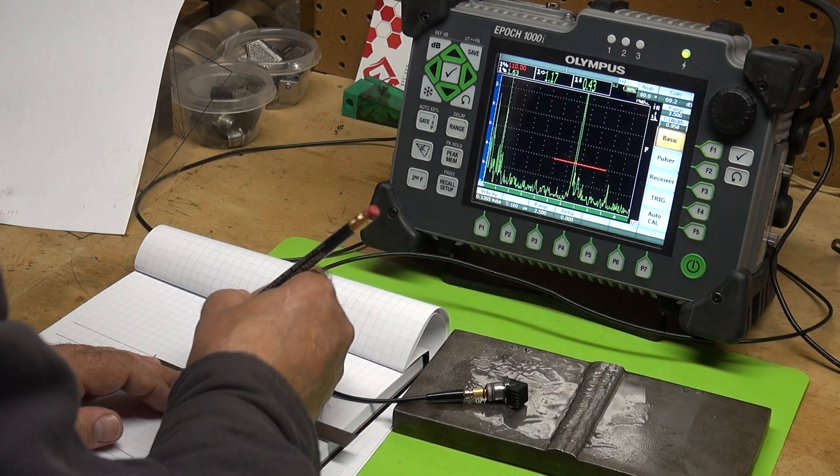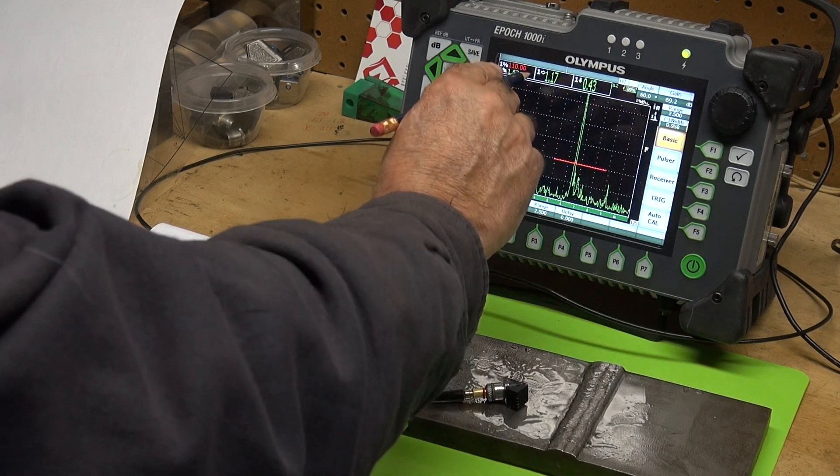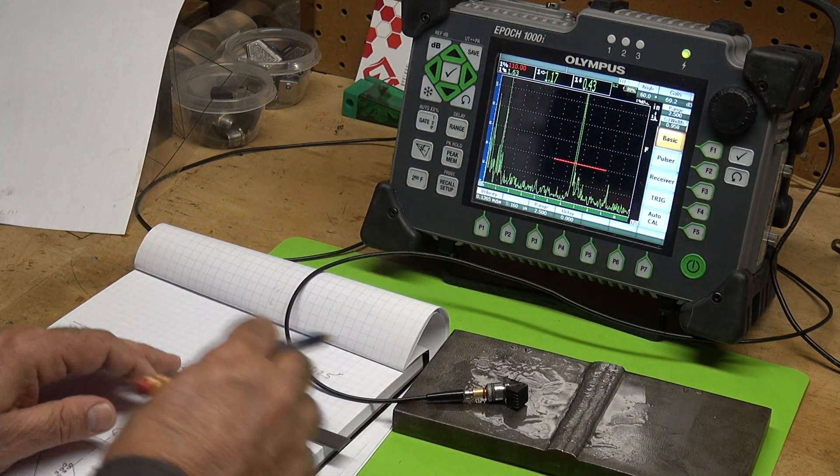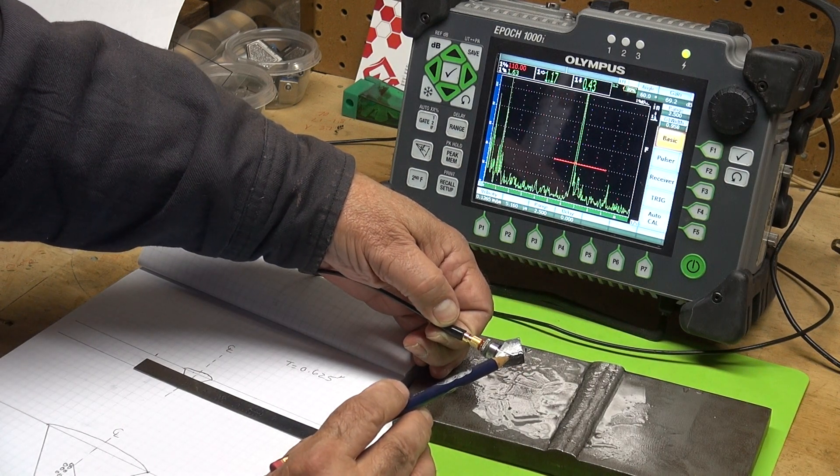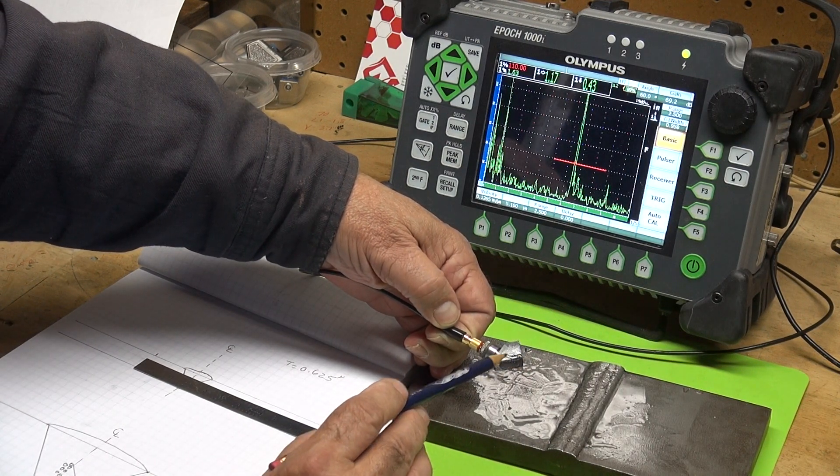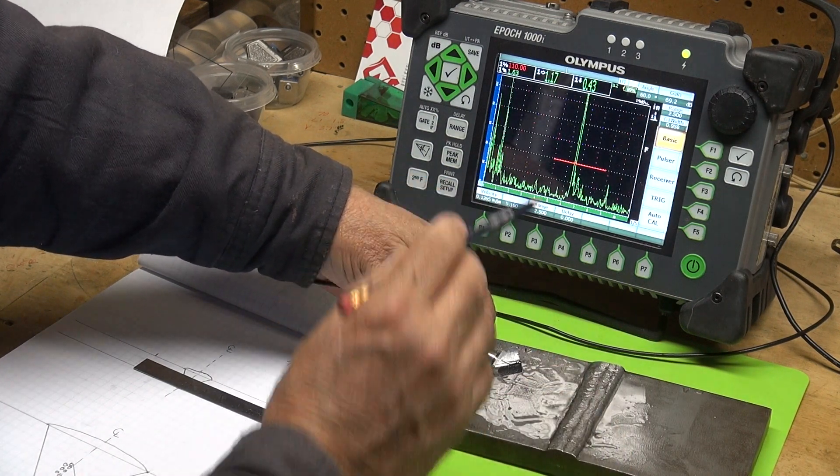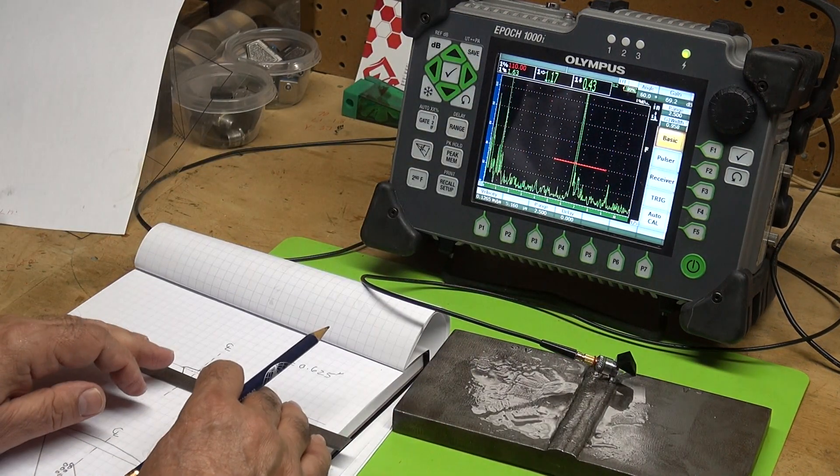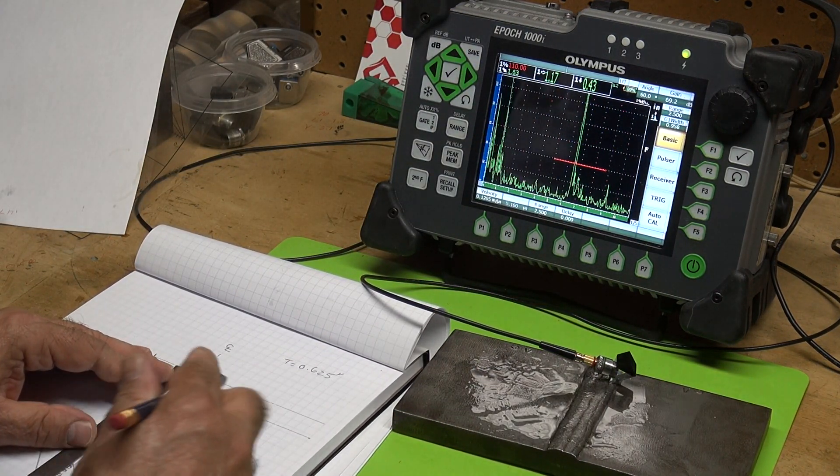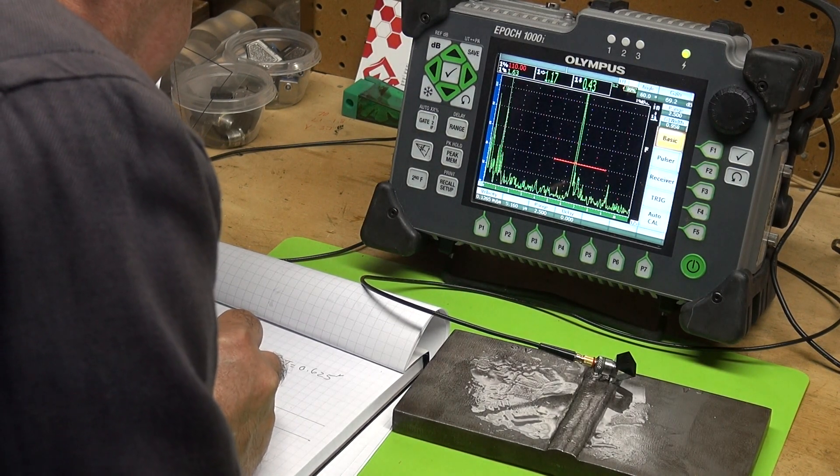Remember, my beam index point and the distance between the front of my wedge and beam index point is 0.25 inches. I put the x value in as 0.25, so my measurements are taking from the front of the wedge. So 1.17 and then 0.43 inches down, right about here.